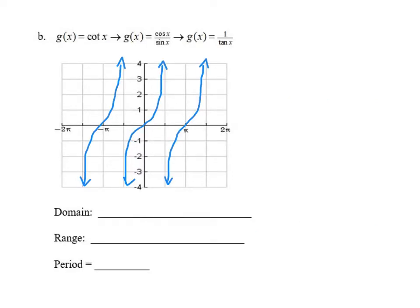To do the cotangent graph, I've gone ahead and graphed the tangent curve. Let's use the fact that cotangent is the reciprocal of the tangent. All we're doing is taking the reciprocals of all the output values of the tangent curve. I'll draw the cotangent graph in red.